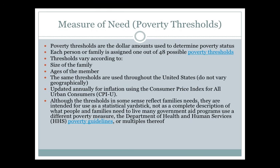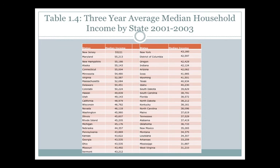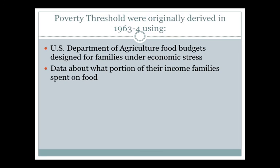Thresholds vary according to the size of the family and the ages of the members, just as in 1963. The same thresholds are used throughout the United States and don't vary geographically, except for Hawaii and Alaska. They are updated annually to account for inflation. Although thresholds are used to reflect families' needs, they are intended as a statistical yardstick, not a complete measure of what people and families need to live. Government programs may use a different poverty measure, so there can be variations.